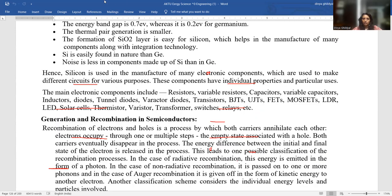The main electronic components of semiconductors are your bipolar junction transistors, FETs field effect transistors, light emitting diode, solar cell, thermistor, varistor, transformer switches, etc.